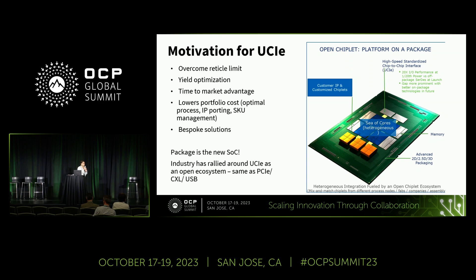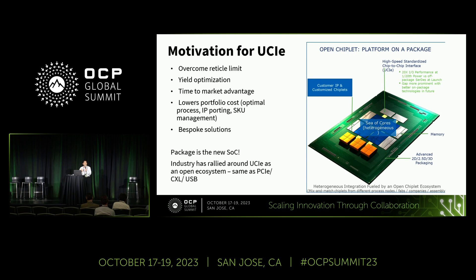Chiplets also offer the choice of deploying the optimal process node for each function. For example, computing can go in the most advanced process node. Memory I/O controllers can go in a more mature process node. Analog wants to be in a different process node. Optical wants to be in yet another process node. And of course, memory needs its own different process technology. It also enables bespoke, customized solutions for different customers — different mixes of compute, acceleration, and memory depending on the need.